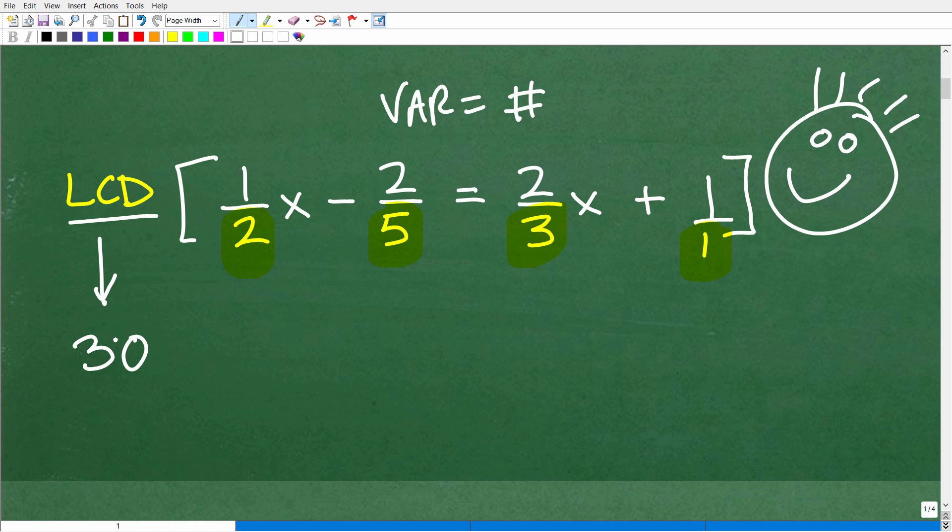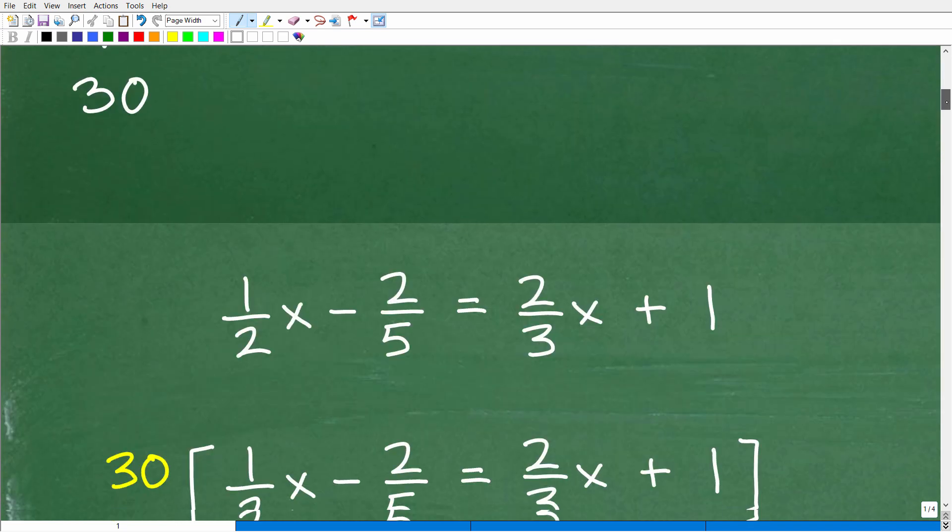And if you knew that the LCD was 30, that's excellent. It shows me you know a bit of mathematics. So what you want to do is multiply this entire equation by 30. And what that's going to do for us is clear the fraction. It's going to be much easier to deal with this equation versus just adding and subtracting and moving all these fractions around. So let's go ahead and get into it now.